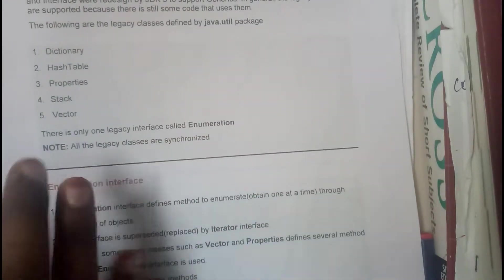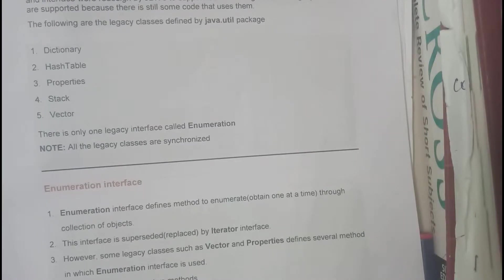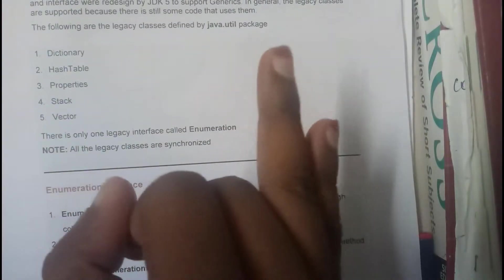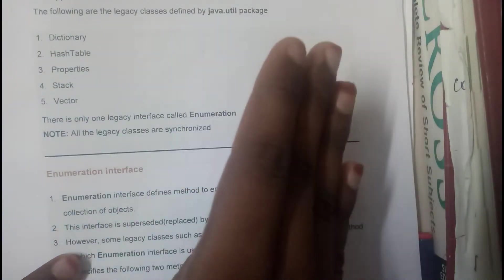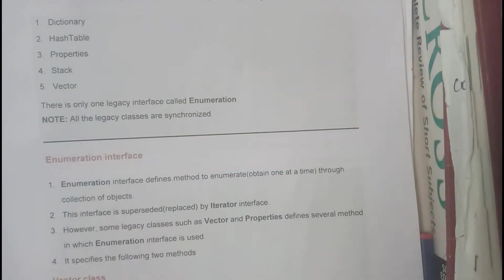The few things that come under legacy classes are the dictionary, hash table, properties, stack, and vectors. There is only one legacy interface: the enumeration interface.